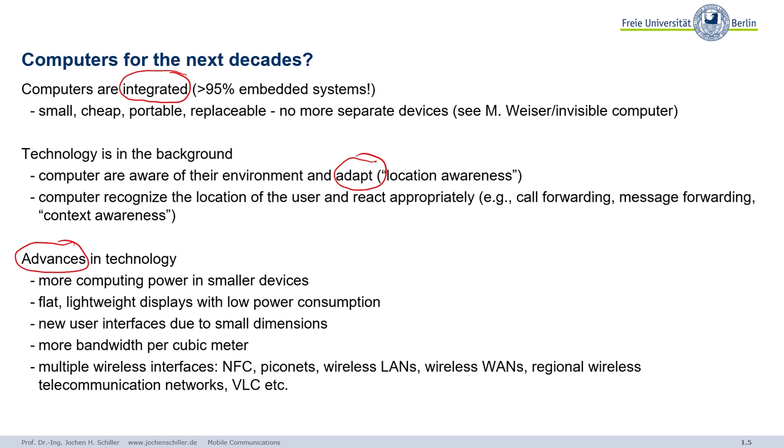Displays can be big or quite small, with high resolution. What is also quite important is that we need many more new user interfaces. Think of the size of your fingers and then think of a smart watch. Maybe it's better to have a voice-controlled gadget — voice or gesture control, something like that.